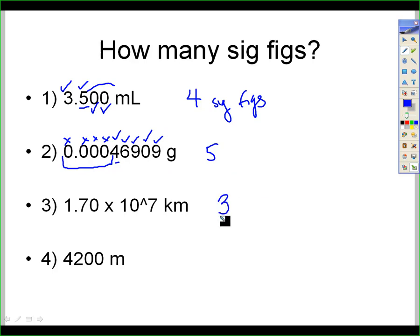Number three, your answer is three sig figs. Numbers in scientific notation, we can ignore the exponent, power of ten, and just look at the coefficient. The one, the seven count. The zero at the end, there's a decimal, so it also counts.